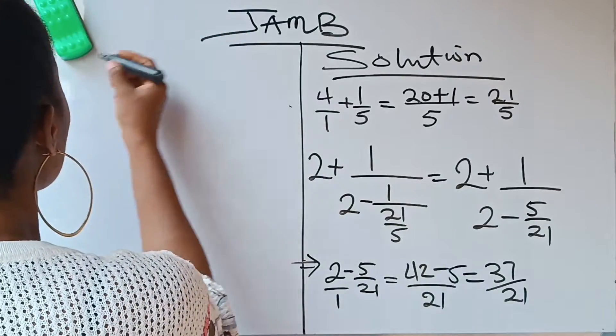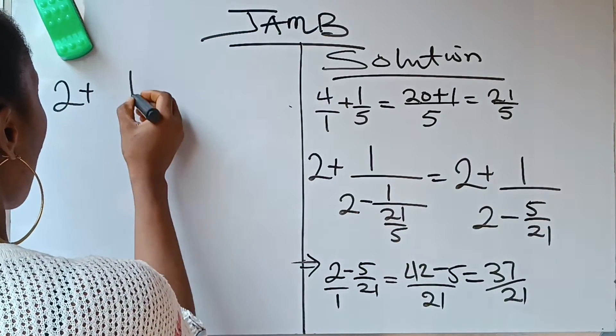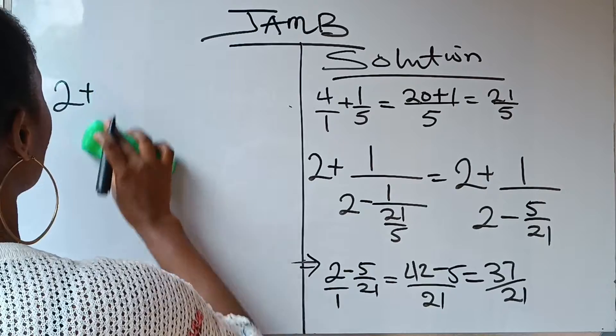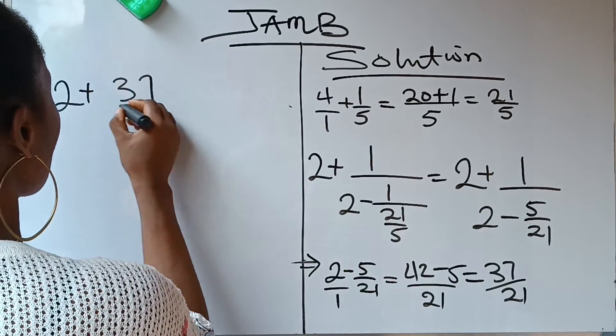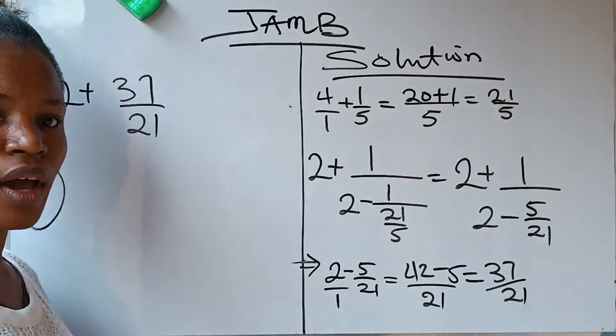So you are going to have 37 over 21. So what do we have now? We have gotten this whole denominator as 37 over 21.